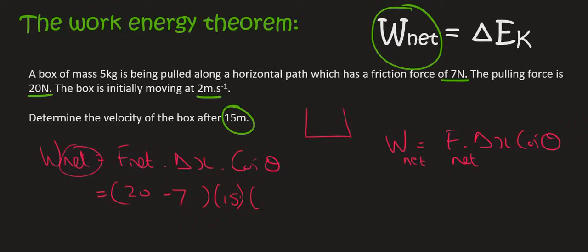And if this box has a net force, which is 20 minus 7, that's positive, so the box is going to move like this to the right. The net force is to the right. And let's say the box is also going to be moving to the right. And so we can say cos of 0. And so if you go work that out, you end up with 195 joules. So that is W net.